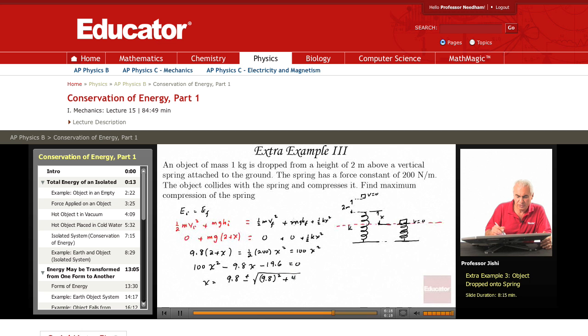minus 4 times 100 times minus 19.6, so that's plus 4 times 100 times 19.6, divided by 2 times 100.